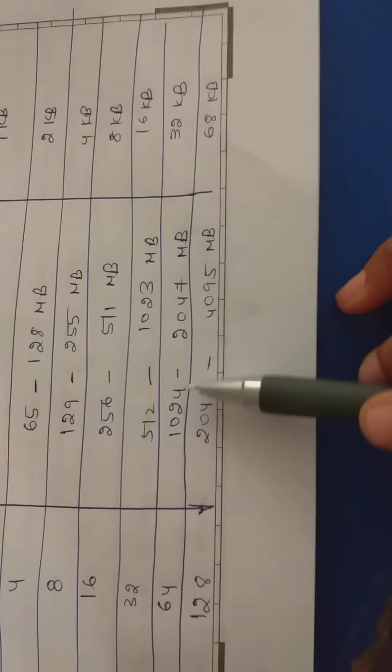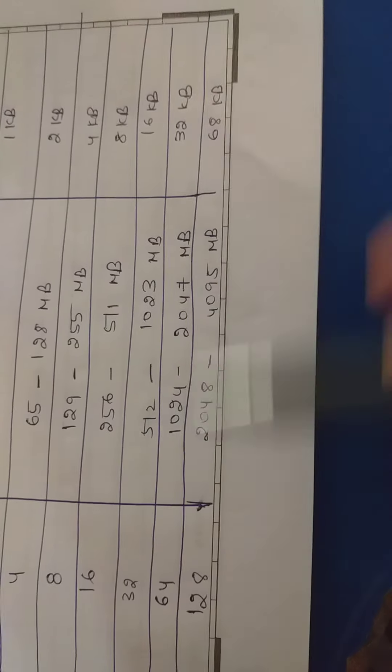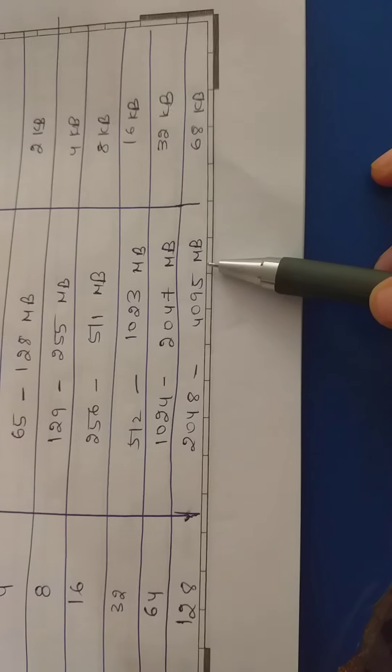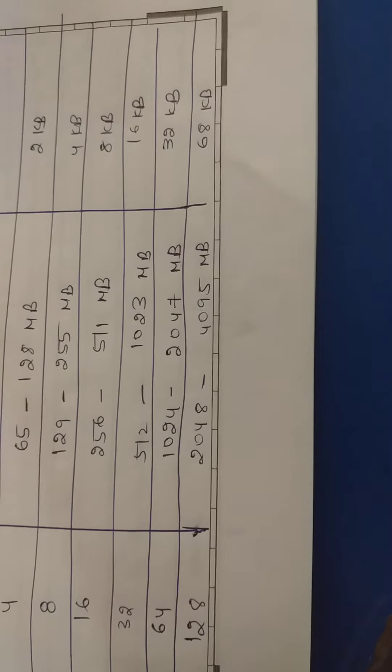64: 1024 to 2047 MB, 32 KB. 128: 2048 to 4095 MB, 64 KB.